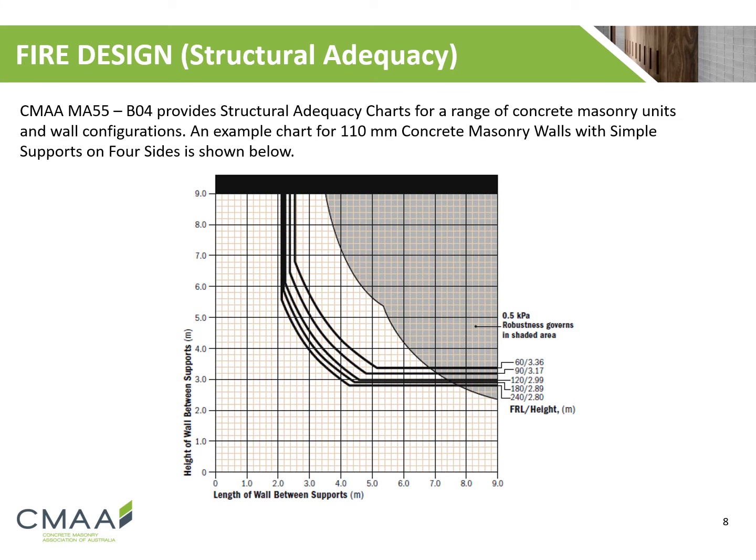An example chart for a 110mm thick concrete masonry wall simply supported on all four sides is shown below.